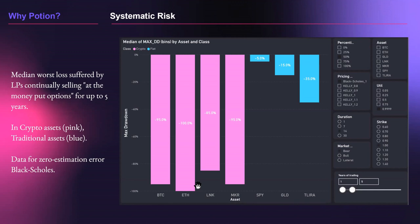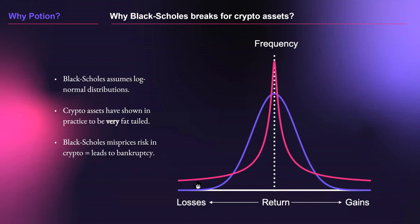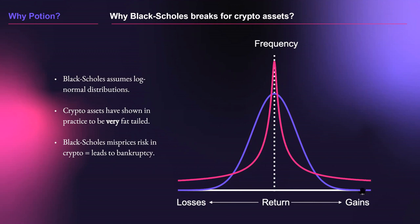We scratched our heads trying to understand why Black-Scholes was performing so badly for LPs. The answer: Black-Scholes fundamentally assumes that underlying prices move smoothly according to Gaussian distributions — the purple line here — which has a lot of probability mass in the center but zero probability in the tails, meaning large price swings are not contemplated. But crypto assets behave exactly the opposite: in the pink line here, there is a very significant probability that the price will move suddenly and dramatically, exposing the LP to very high risk. Black-Scholes misprices this risk, which explains the high bankruptcy rates observed.